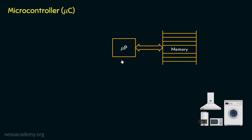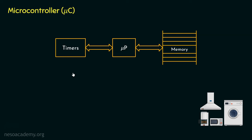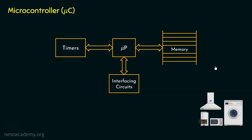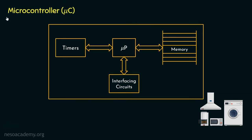Apart from this, with the microprocessor, we also have timers interfaced. These timers are used to generate delays. For example, if we instruct our washing machine to wash our clothes, and based on the number of clothes loaded the machine is going to take 10 minutes, that delay will be decided by the timers. We also have the interfacing circuits — using these, the buttons on top of the machine will interact with the microprocessor. All of these components are placed together on a single chip, which we are calling the microcontroller.